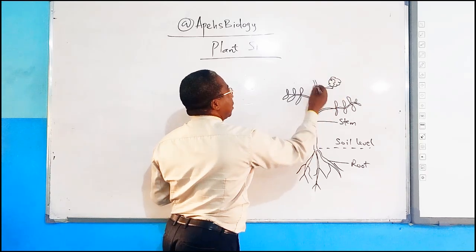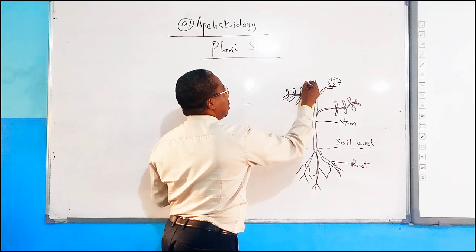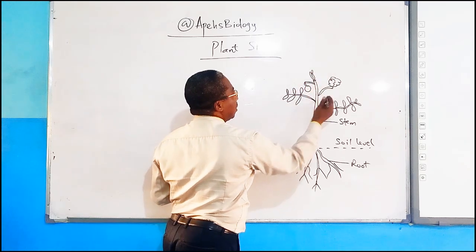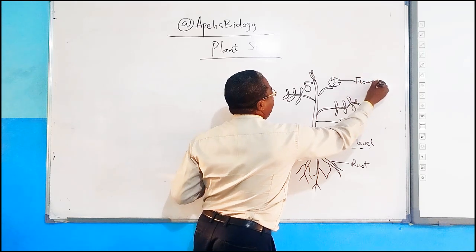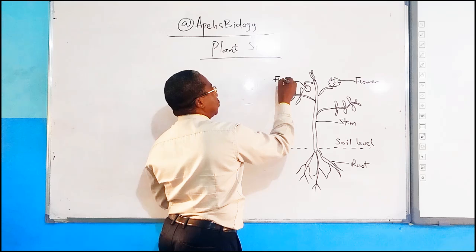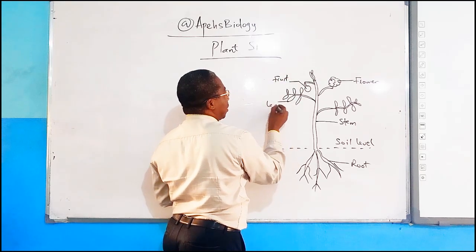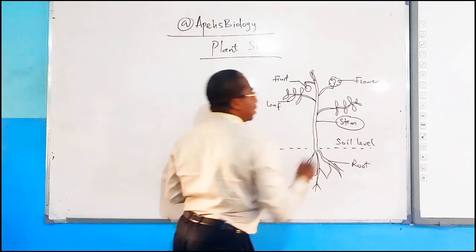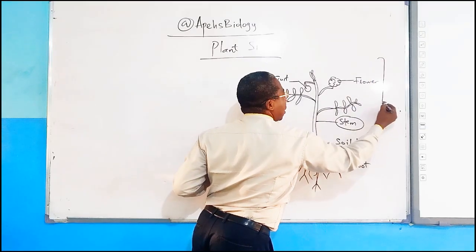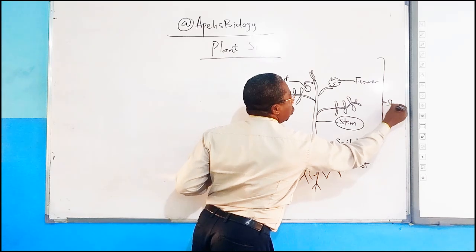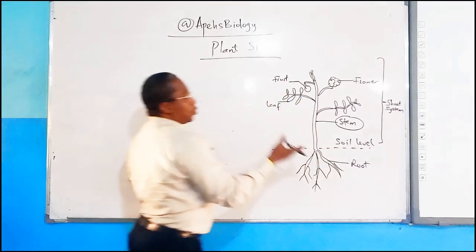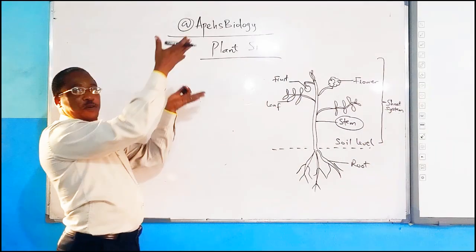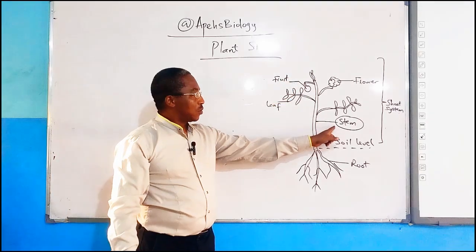That represents the flowers. You can also see that on the stem you can have fruits hanging, and the internal part of the stem will be there. So this represents our flower, this structure here represents our fruit, and these ones represent the leaves. Everything from here upward is called the shoot system. The shoot system is that part of the plant that grows above the soil, and it is the shoot system that is composed of the stem.